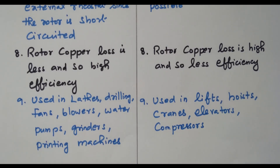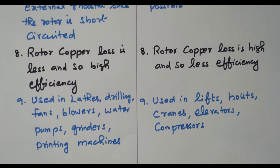In this video we discussed the construction of the three-phase induction motor — the two main parts being the stator and rotor. The rotor again has two types: squirrel cage rotor and slip ring rotor. We discussed the construction of each and also the comparison between them. Subscribe to the channel for more videos and notifications. A soft copy of this material is available in the drive; the link is given in the description box. Thank you for listening.